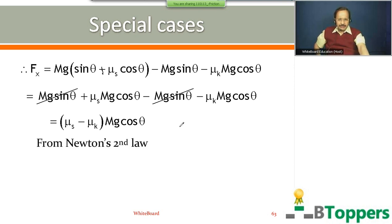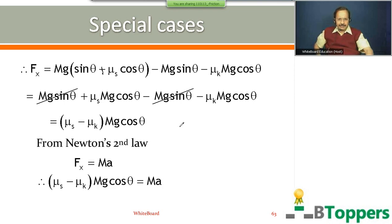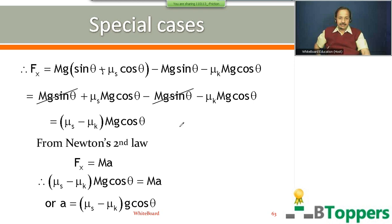From Newton's second law, the resultant force on the block equals mass times acceleration. Substituting Fx equal to (νs minus νk) times mg cos θ on the left side, you get acceleration a equal to (νs minus νk) times g cos θ.